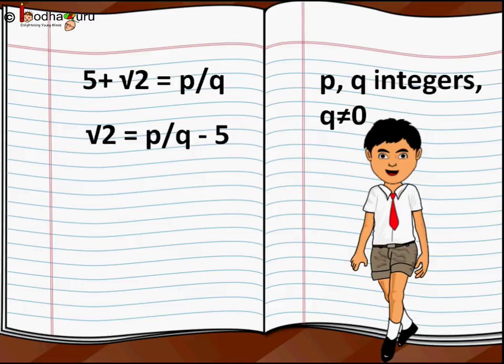Taking q as the LCM on the right-hand side, we get (p - 5q)/q. Now the right-hand side is a rational number because p and q are integers.